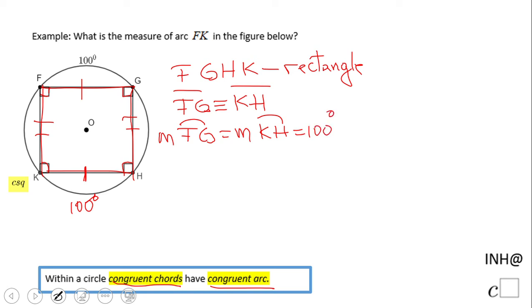But also you notice the other statement: segment FK is congruent to segment GH, which gives us the measure of arc GH is the same as the measure of arc FK. But how can we find it? Now look at here.